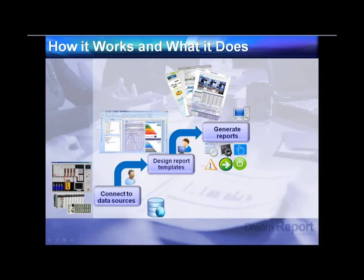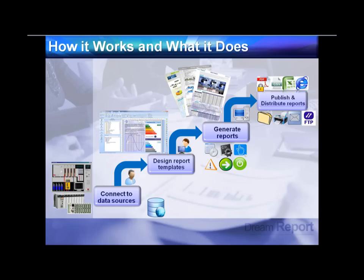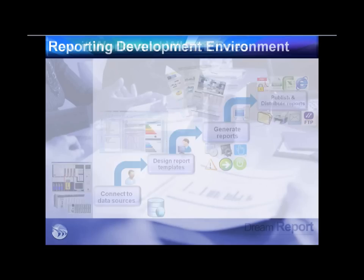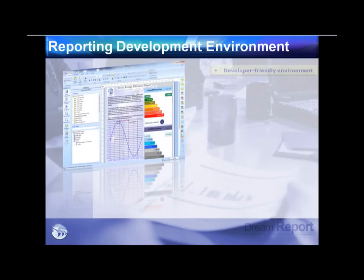You then decide how reports get distributed and published: as a native or secured PDF, a CSV file, an Excel spreadsheet, or directly to a web page. You can save reports to directories, FTP them to an FTP site, email them to one or more users, or print hard copies to one or more printers — all as checkbox options within DreamReport.